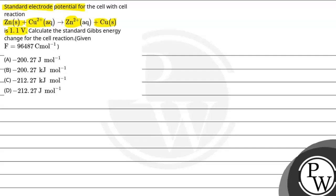So we have to calculate the standard Gibbs energy for the cell reaction. F, that is Faraday's constant, is given to us. First of all, we need a key concept here.